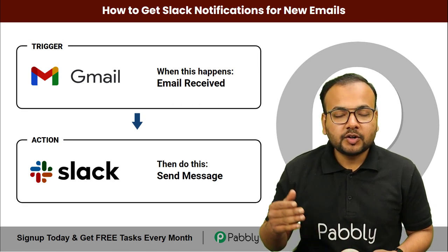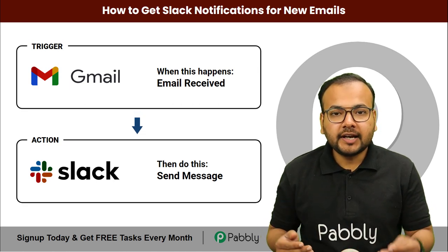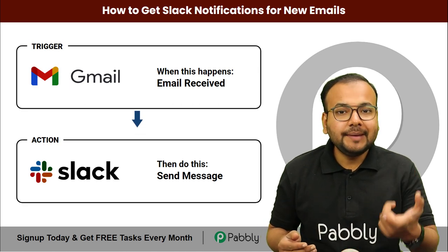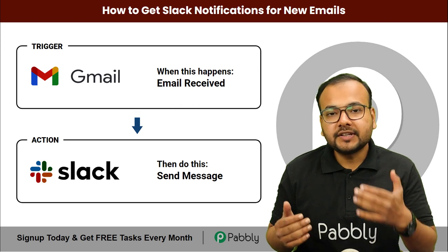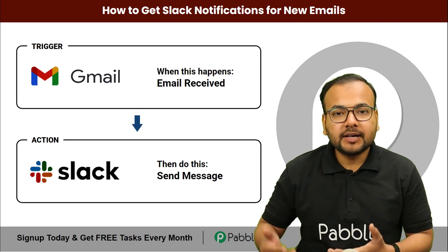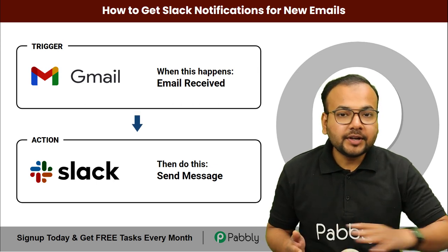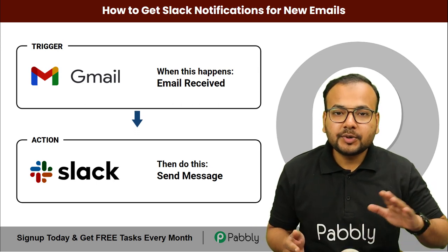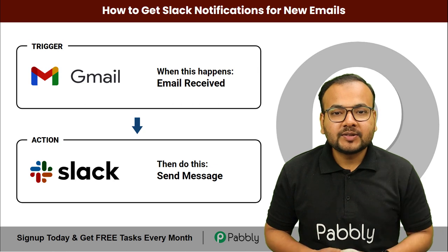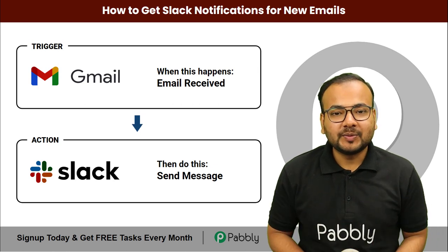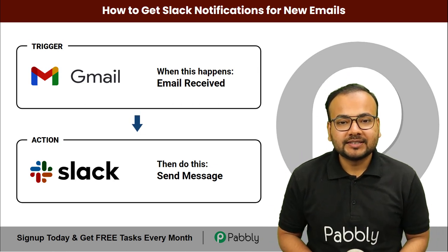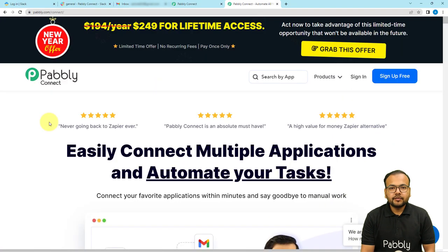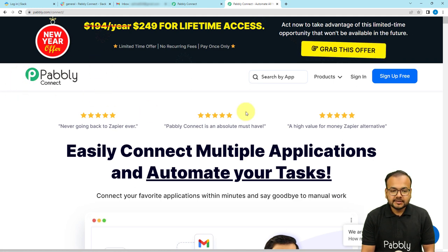We are going to set up an automation to connect your Gmail inbox with Slack, and we are going to set it up without any coding, super simply. We are setting up this automation using Pably Connect, which is an automation tool.